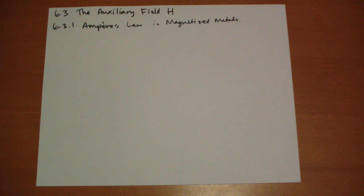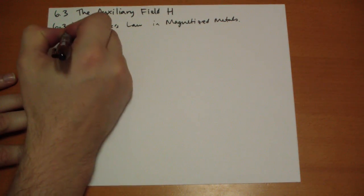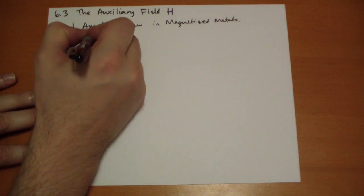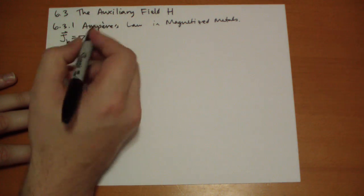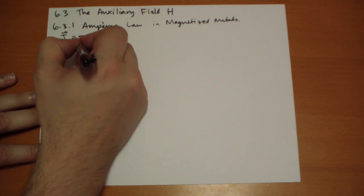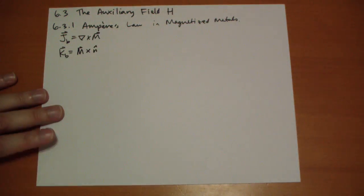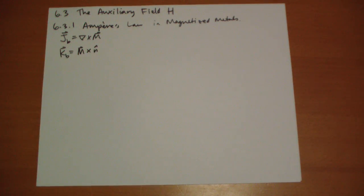Now that we know that the bound current is just the curl of whatever magnetization is inside the material, and the surface current bound is the magnetization across the normal hat at the surface, we can think about what happens in problems where we have currents that are flowing in addition to these, and what happens to the net result of the magnetic field.